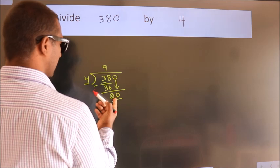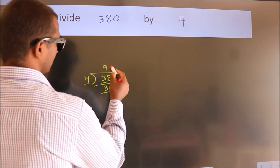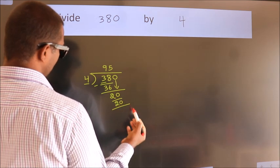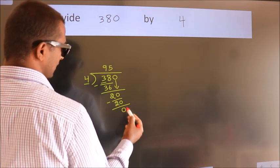When do we get 20 in the 4 table? 4 times 5 equals 20. Now we subtract. We get 0.